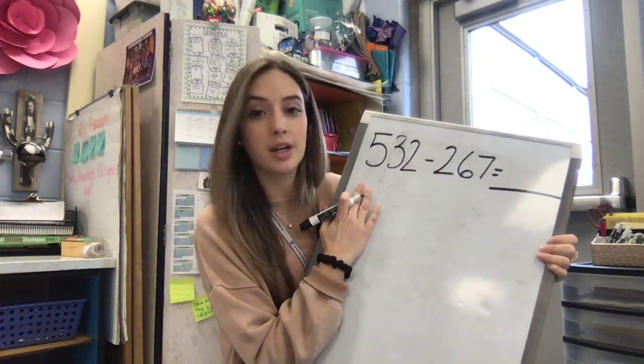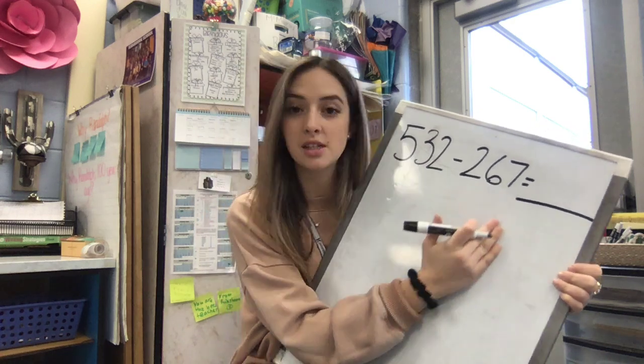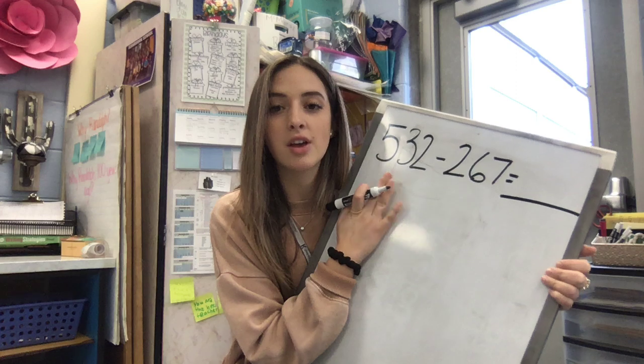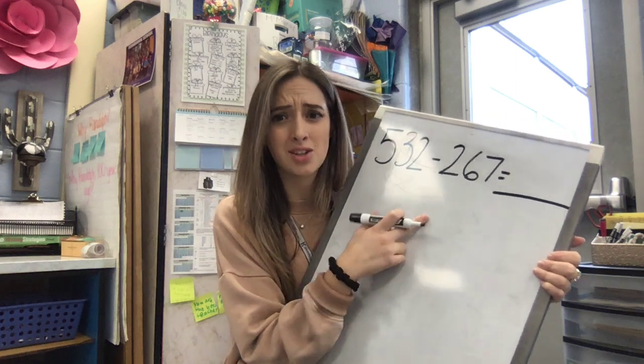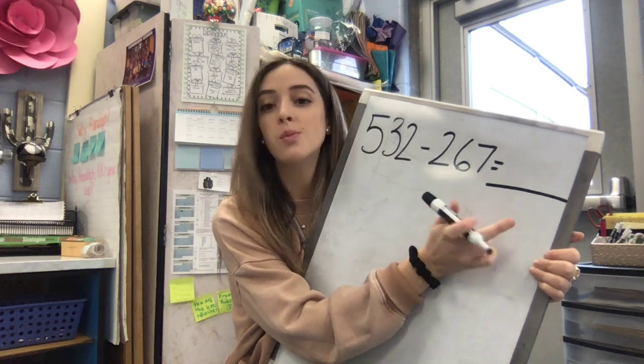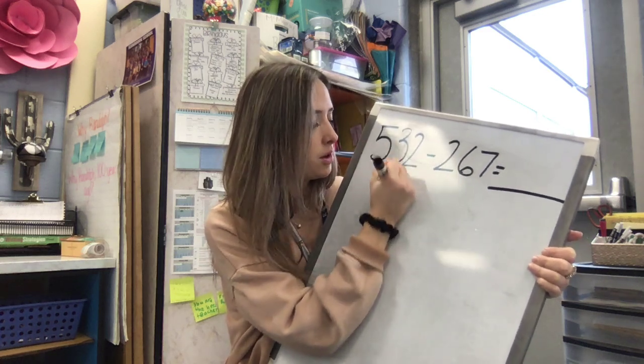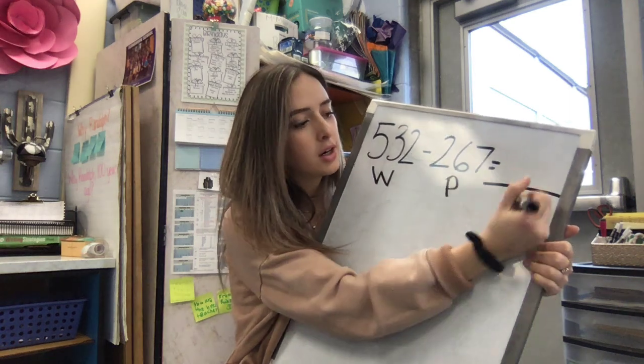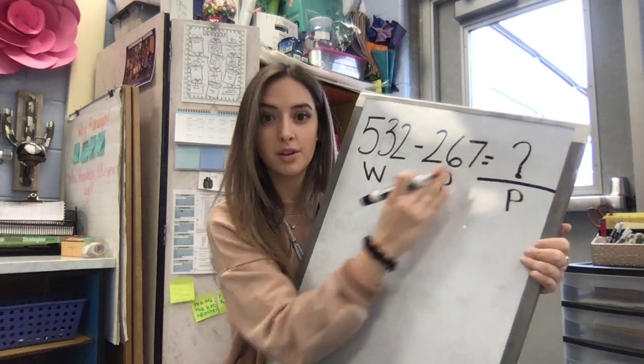Let's label our whole and our part. So we have 532 minus 267. That means all together I have 532 cookies, and someone's going to take 267 of them. I want to see how many I'm going to have left. Okay, so let's label our whole, our part, and we are looking for our other part, right? This is still a mystery. We have our number model here.